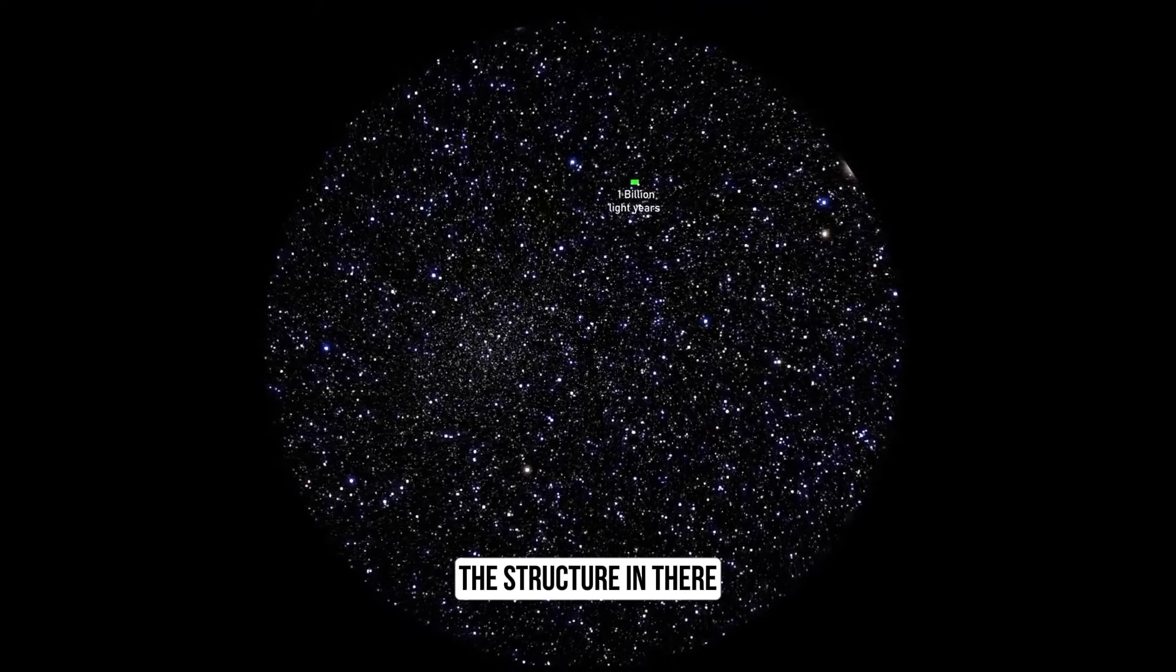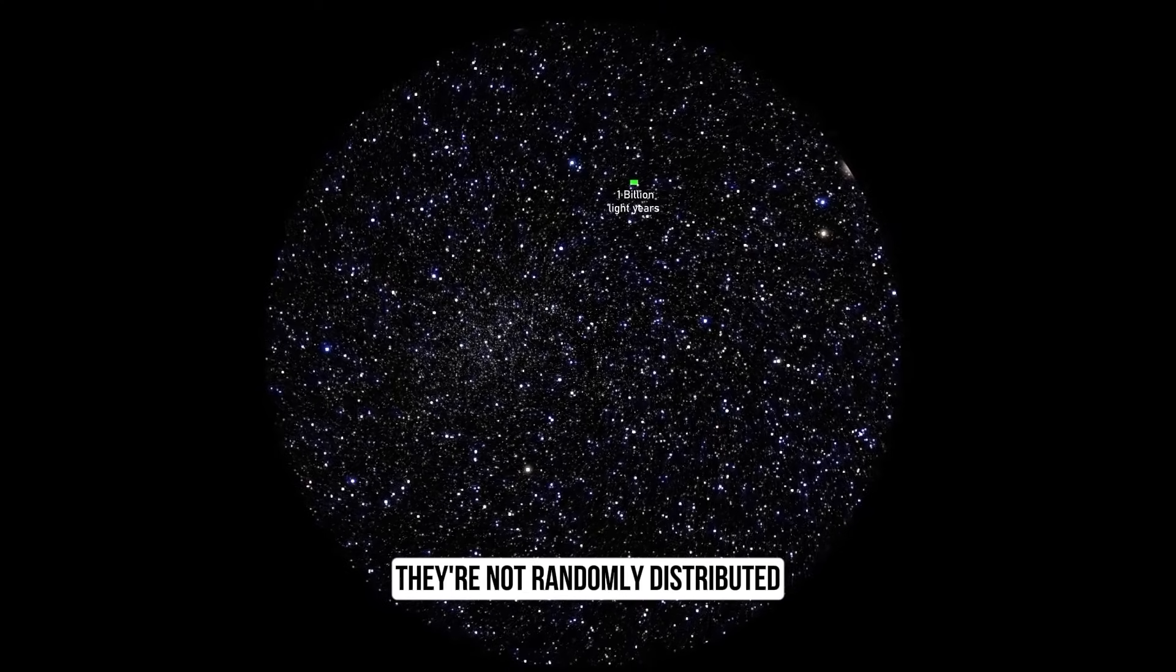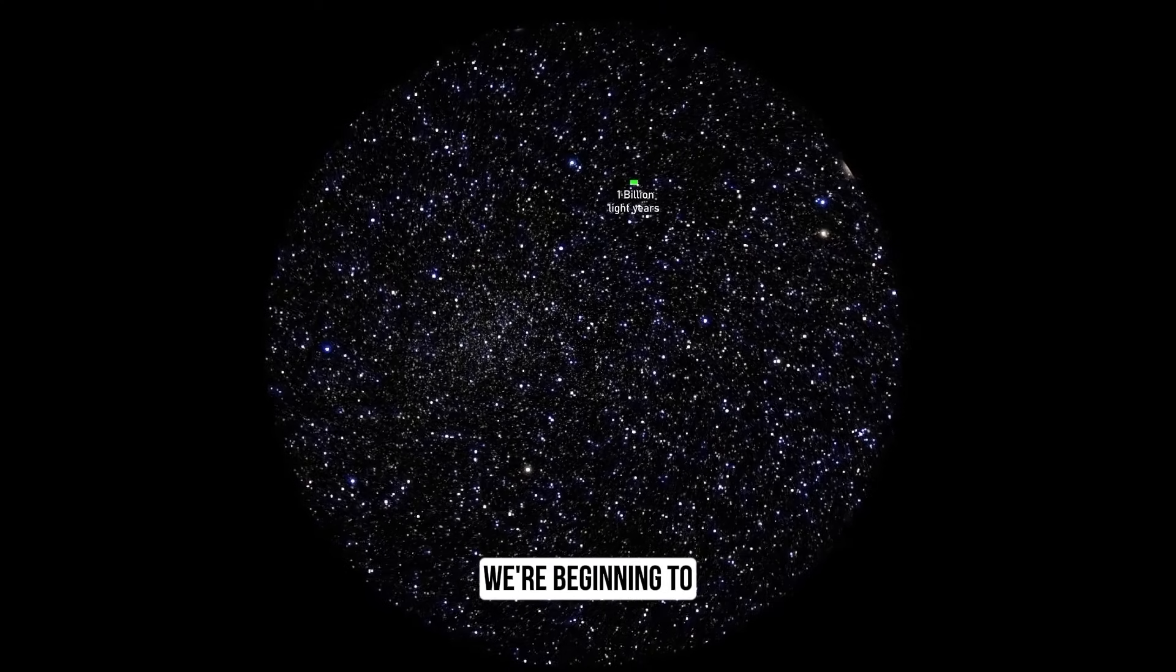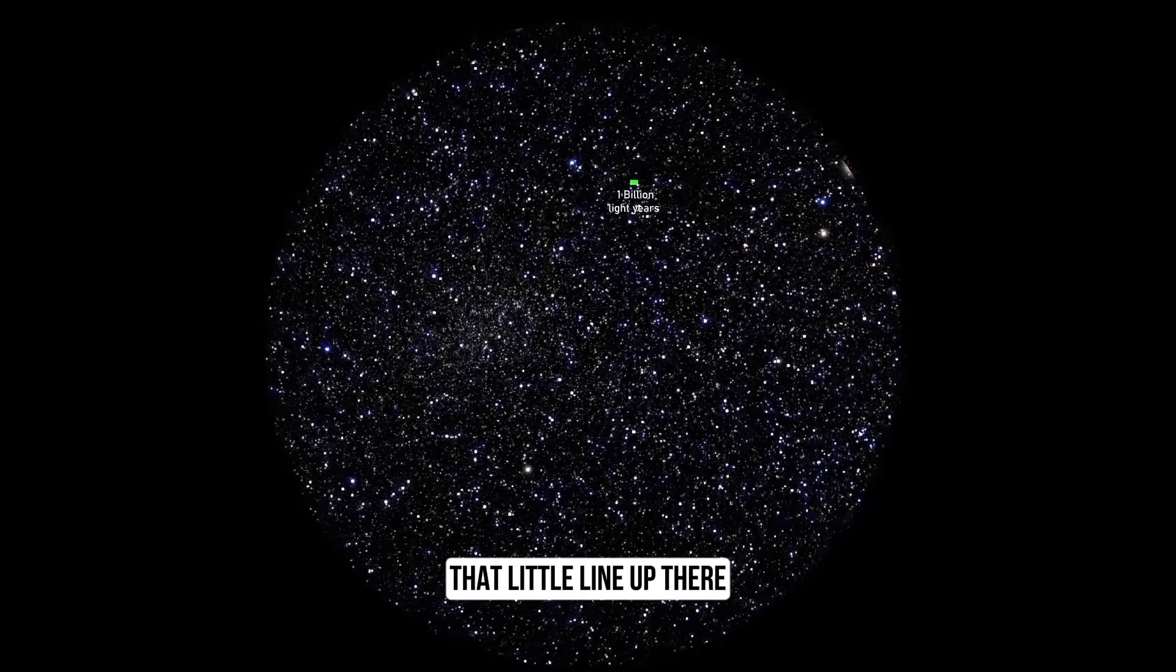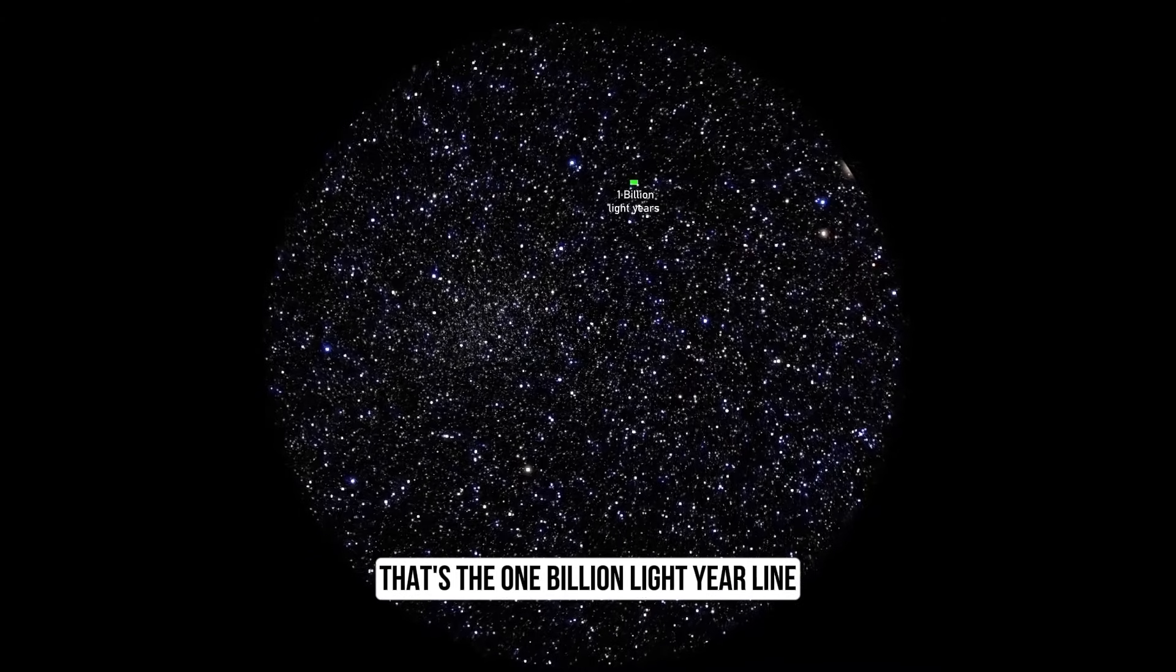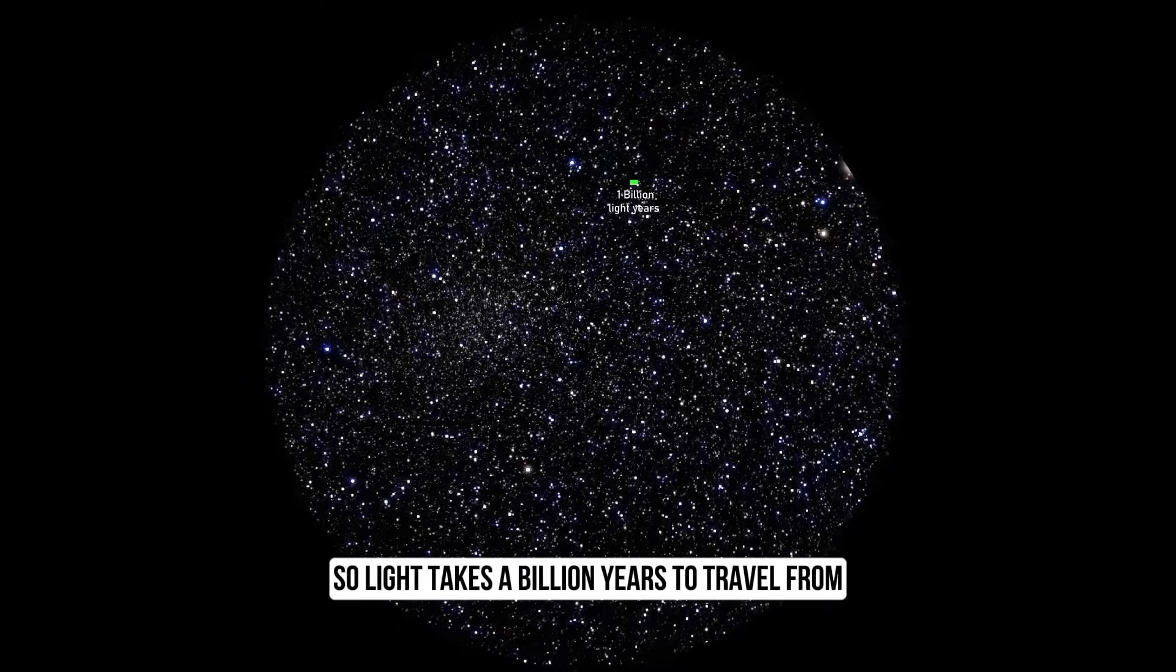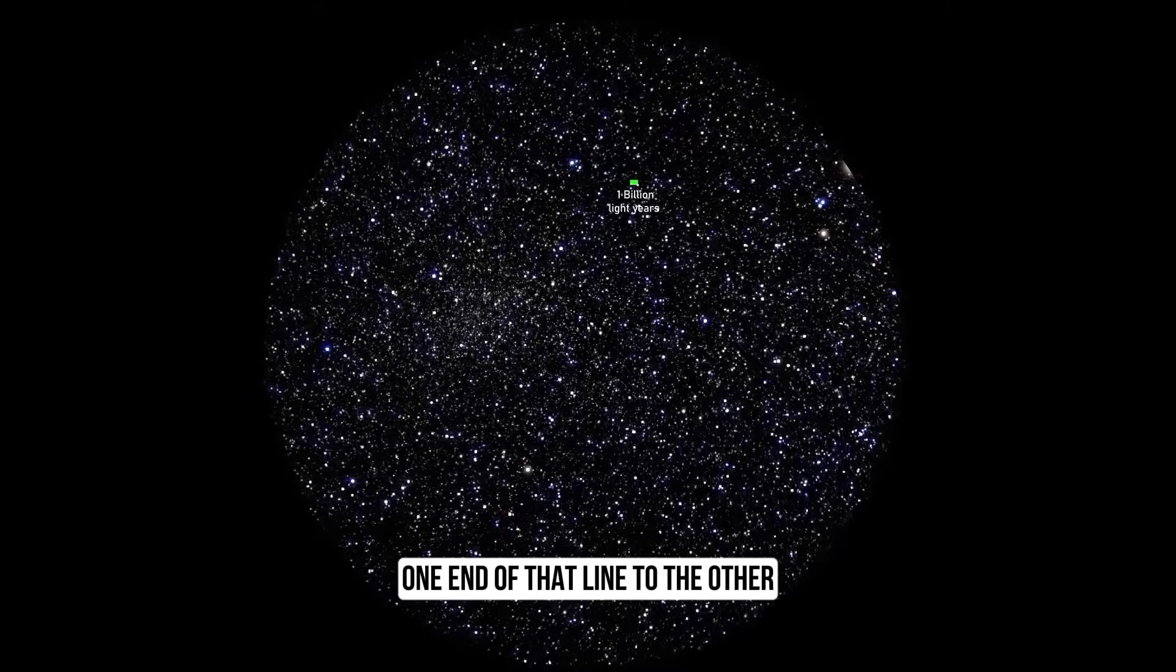You see that the structure in there, they're not randomly distributed. It's very interesting. We're beginning to understand where that structure came from. Just to get some sense of scale, that little line up there, that's the one billion light year line. So light takes a billion years to travel from one end of that line to the other.